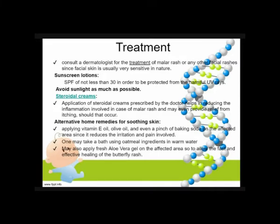Alternative home remedies for soothing the skin include applying vitamin E, olive oil, and even a pinch of baking soda on the affected area, since it reduces irritation and pain. We also advise the patient to take a bath using oatmeal ingredients in warm water, and to apply fresh aloe vera gel on the affected area to allow fast and effective healing of the butterfly rash.